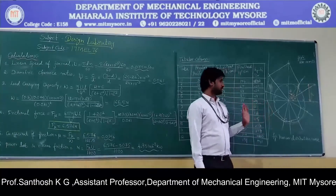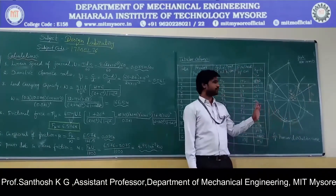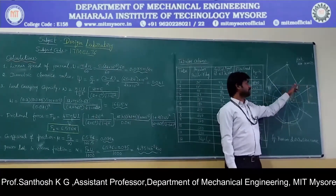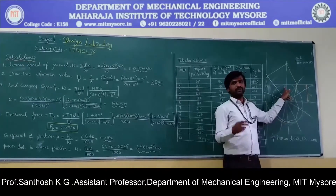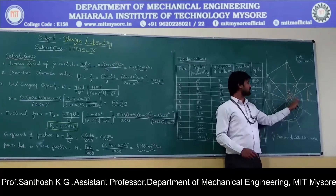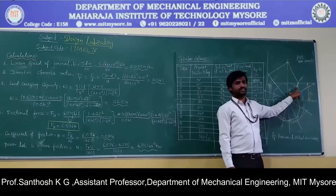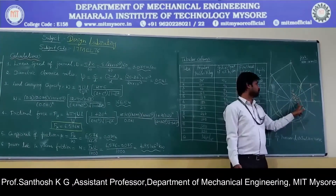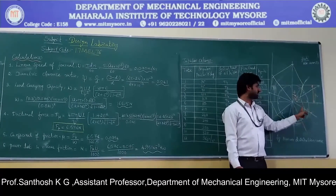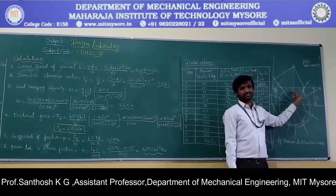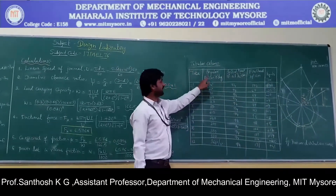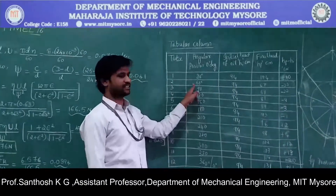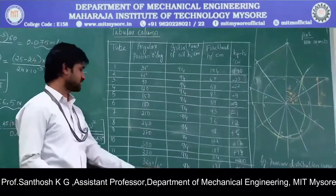In the experimental setup, we use 12 tubes placed at equi-angular distances to measure pressure around the journal bearing. The total angle is 360°, giving 30° between each tube. With respect to the vertical reference, tube 1 is at 30°, tube 2 at 60°, tube 3 at 90°, and so on up to 360°. Before the journal runs, all tubes show the same oil height of 94 cm, confirming uniform pressure throughout the bearing circumference.